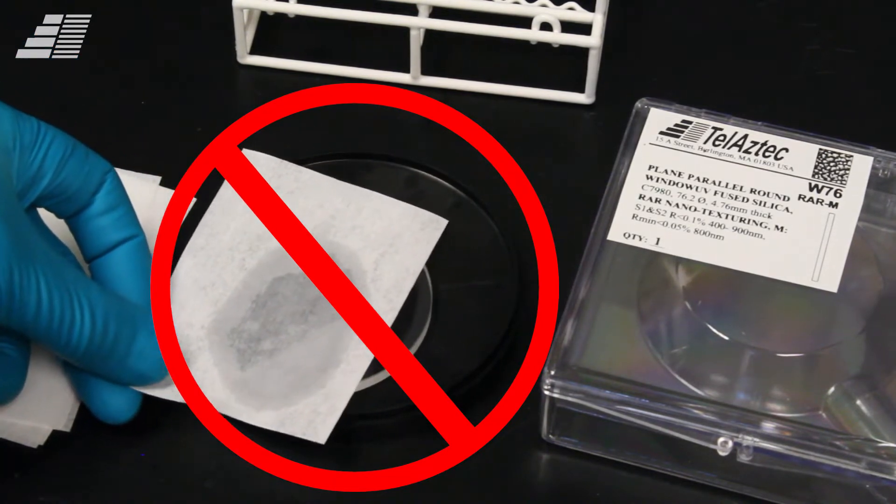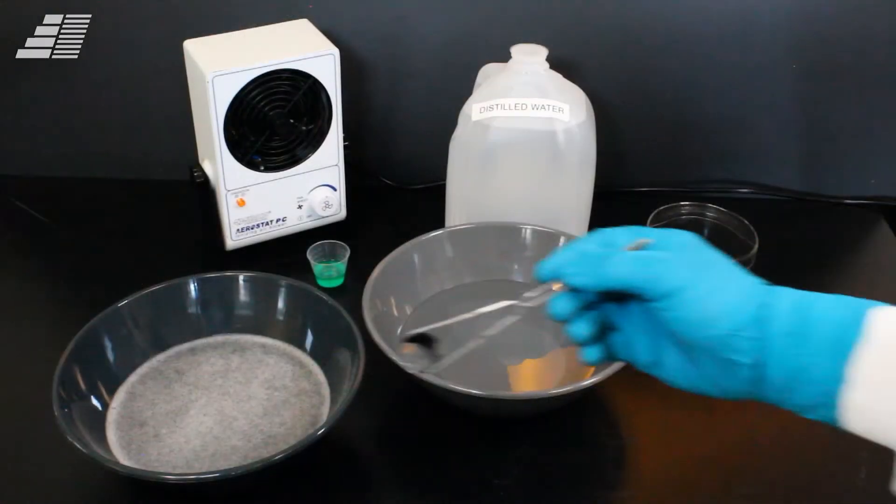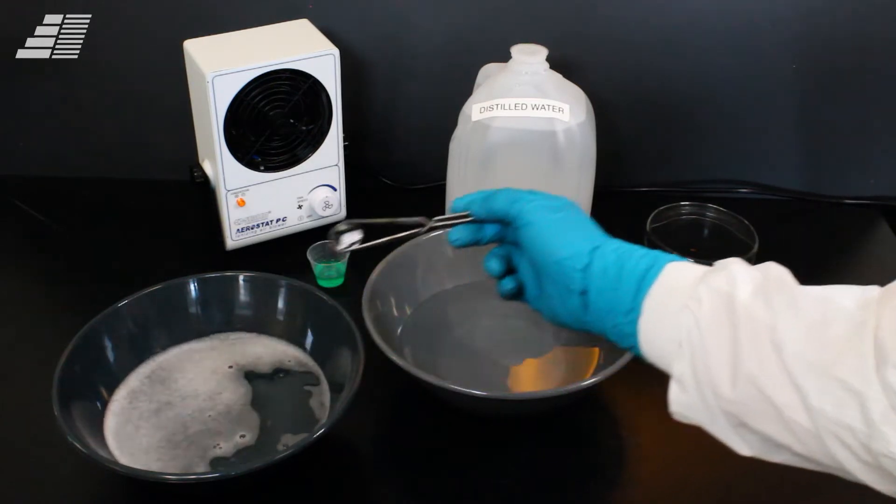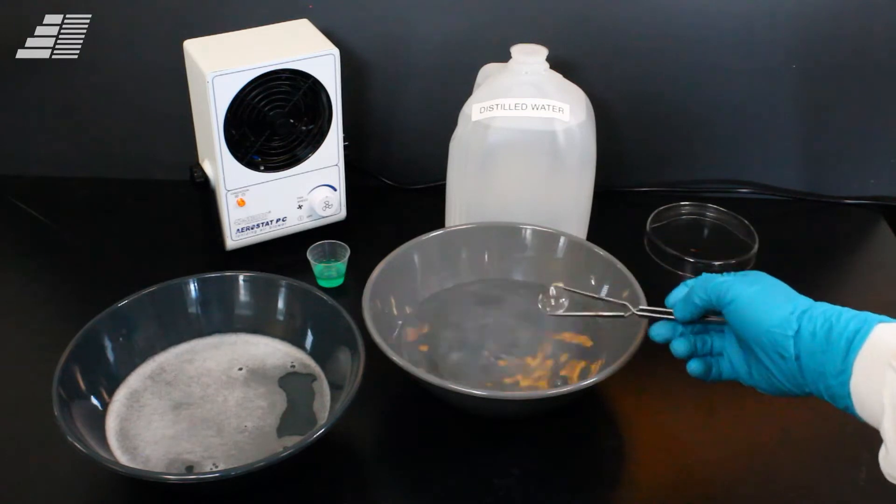Fortunately, the open nature of the RAR nanotexture allows the valleys to be flushed easily with fluids and as an all-glass structure, the cleaning fluid can range from simple soap and water to more aggressive chemical cleaners such as ammonia and even most acids.